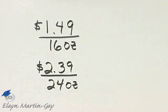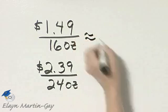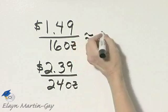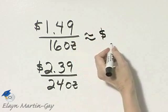So to compare, let's now find each unit price. A unit price is one where the denominator is 1, so to approximate here, you would need to go off to the side, divide 16 into 1 and 49 hundredths, and if you do so, you'll have this number.